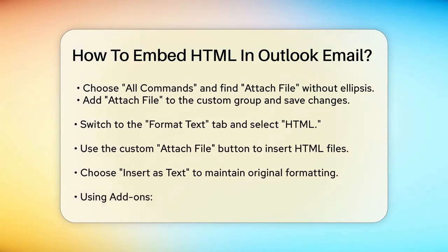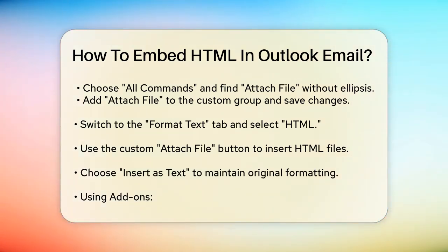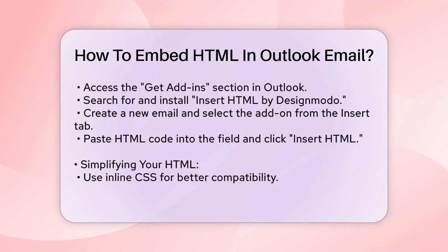This method ensures that your HTML content is inserted into the message body with its original formatting intact. Another effective way is to use add-ons specifically designed for this purpose. One popular add-on is Insert HTML by Design Moto. Open Outlook and go to the get add-ins section. Search for HTML and install the Insert HTML by Design Moto add-on. Create a new email, select the add-on from the insert tab, paste your HTML code into the provided field, and click insert HTML.